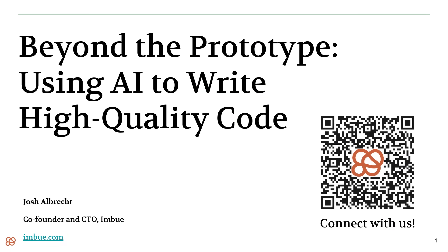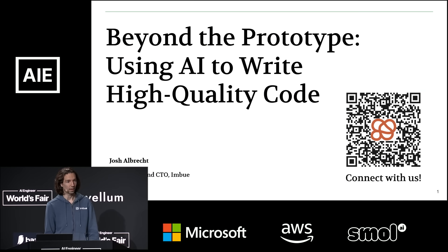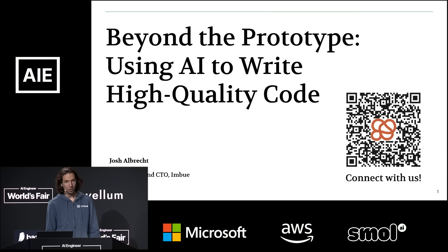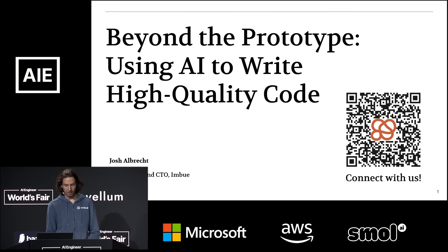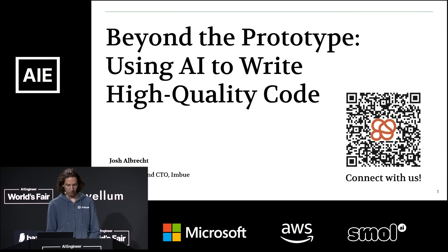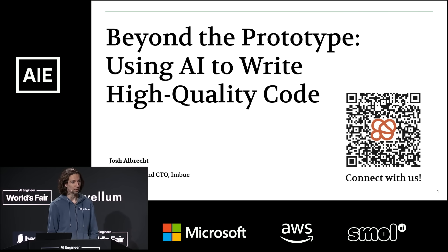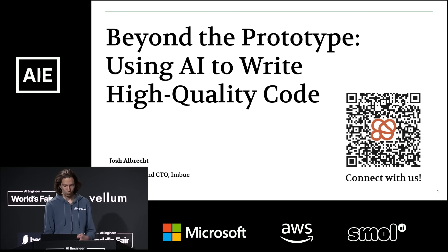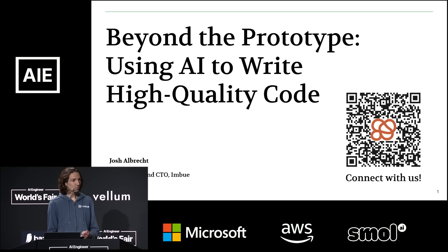I'm Josh Albrecht, CTO of Imbue. Our focus is on making more robust, useful AI agents — in particular focusing on software agents right now. The main product that we're working on today is called Sculptor. The purpose of Sculptor is to help us with something that we've all experienced: we've all tried these vibe coding tools, you tell it to go off and do something, it goes off and creates a bunch of code for you.